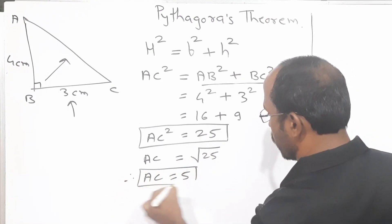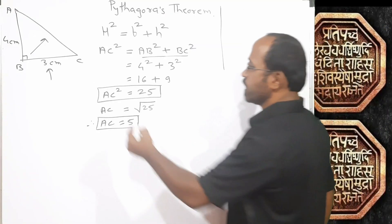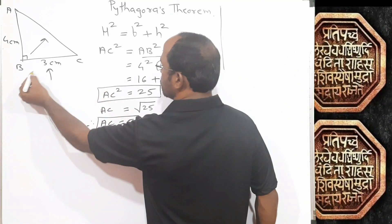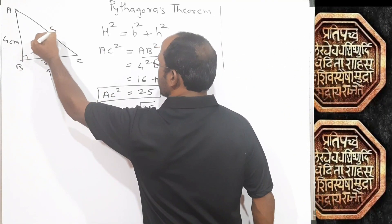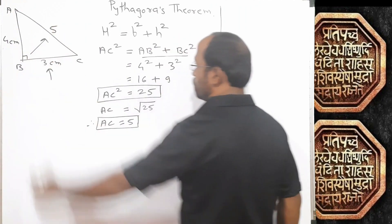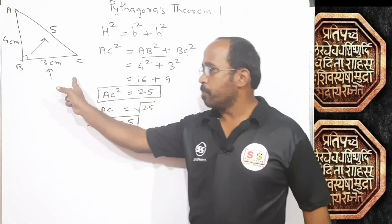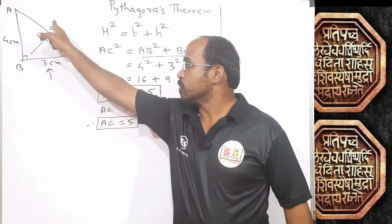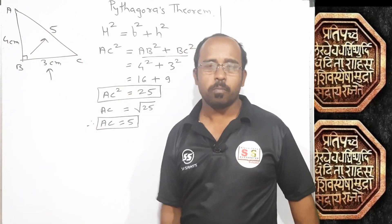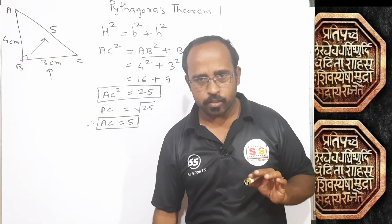Are you getting it, students? So whenever base is 3 and height is 4, hypotenuse will be equal to 5, because square of base plus square of height equals square of hypotenuse.